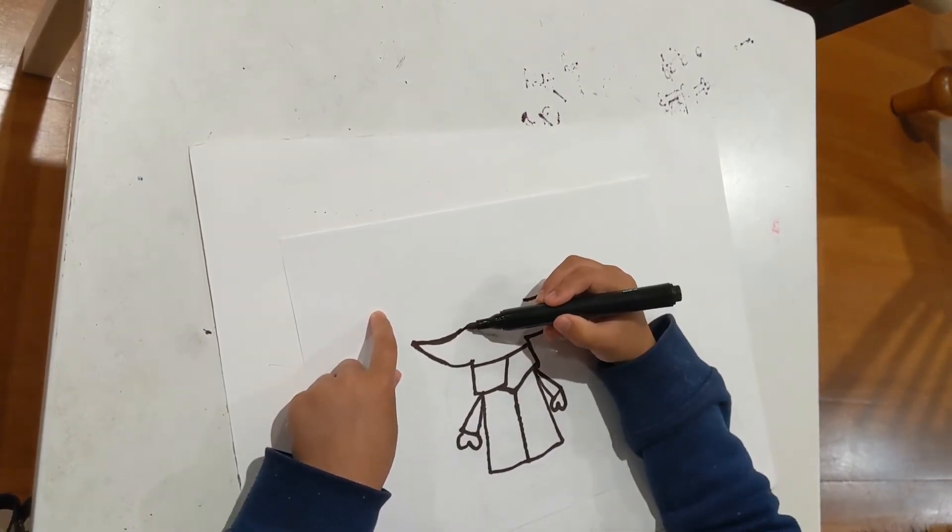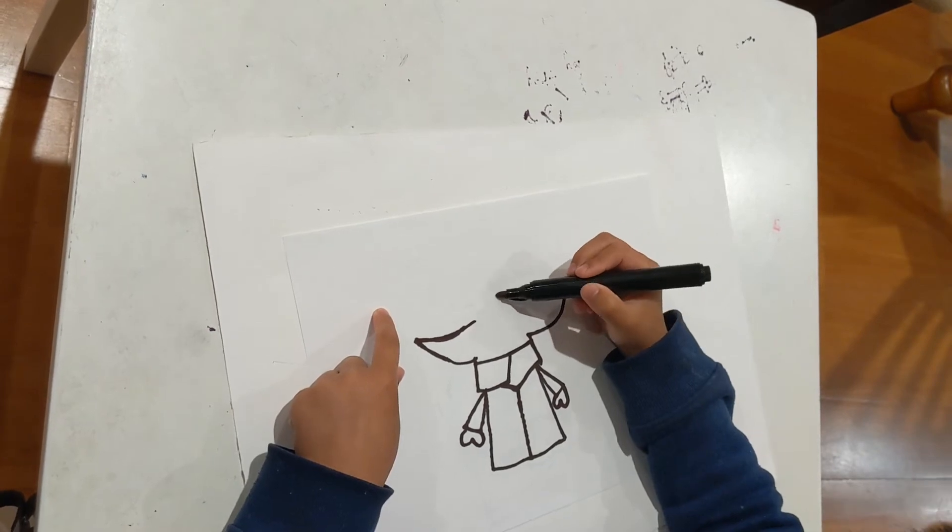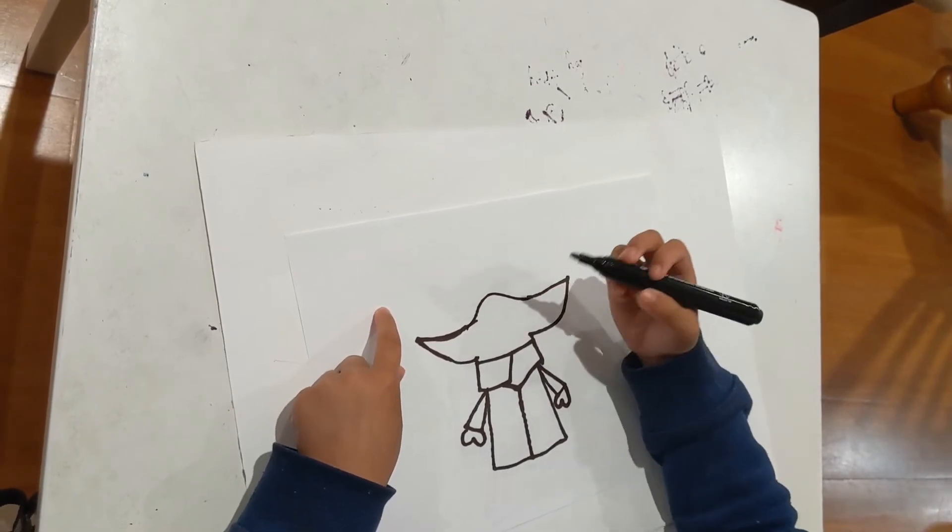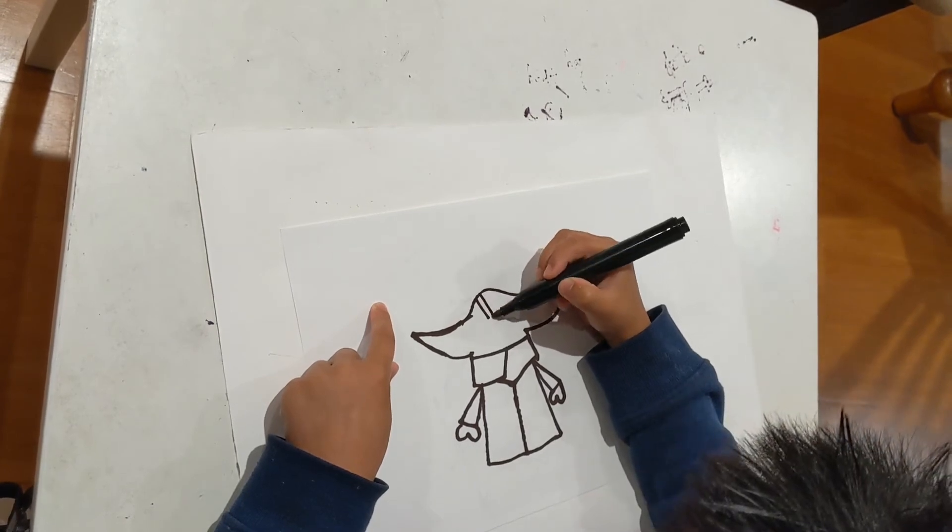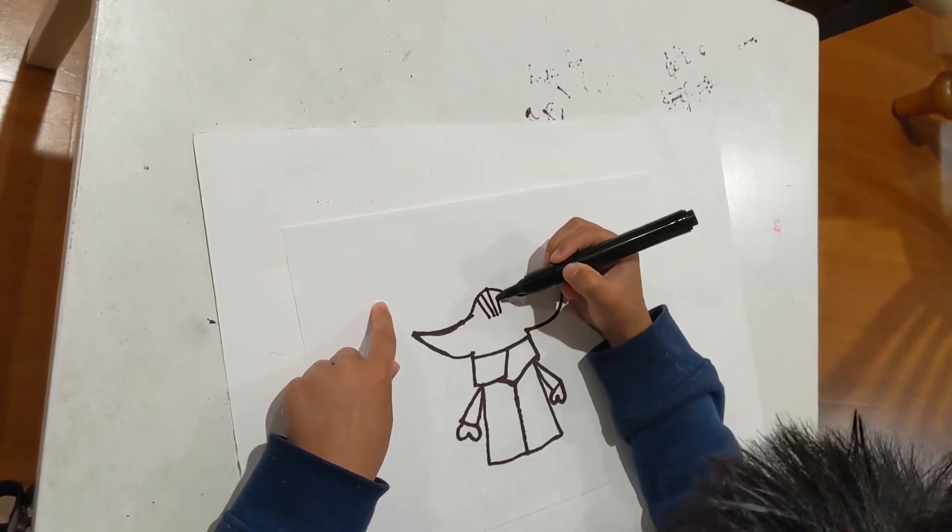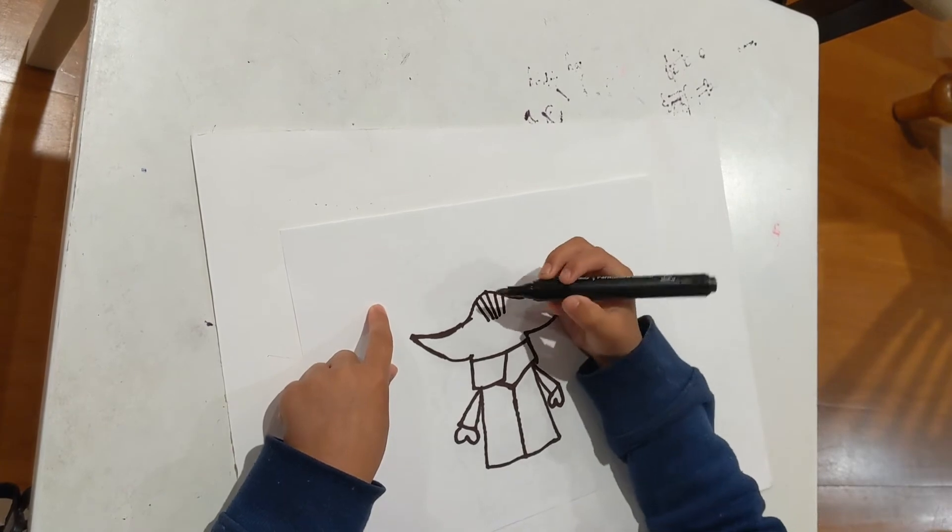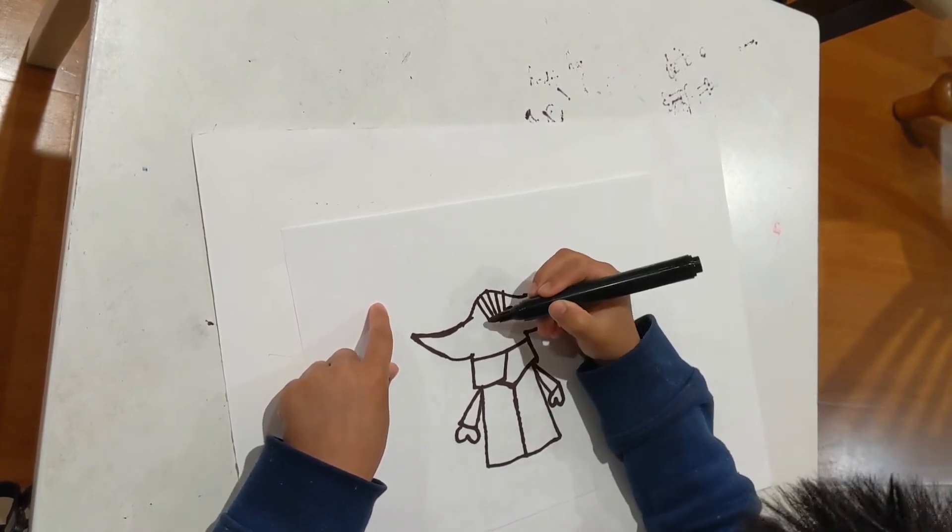Then we'll just make this piece and connect it with a bump. Then we'll draw one line down, other way, one, one, one. Then we'll just draw like that, like that.